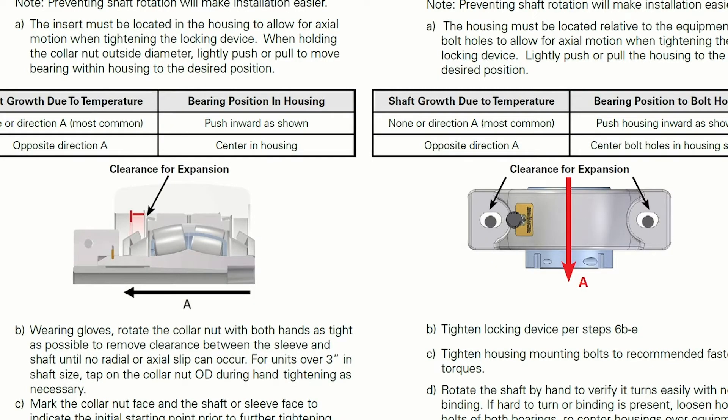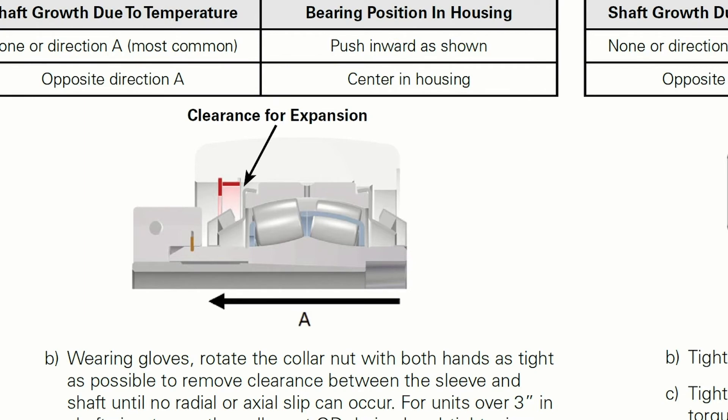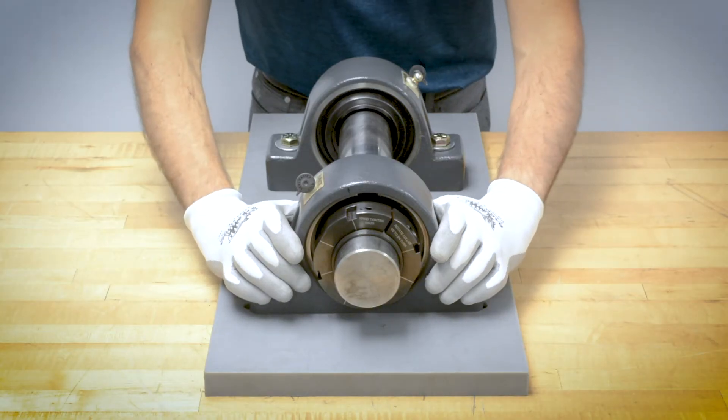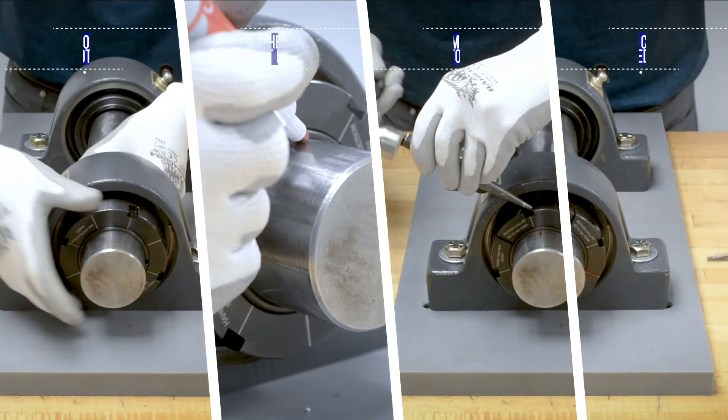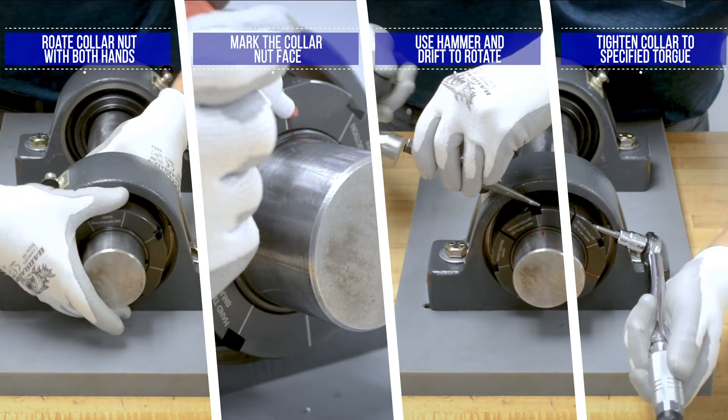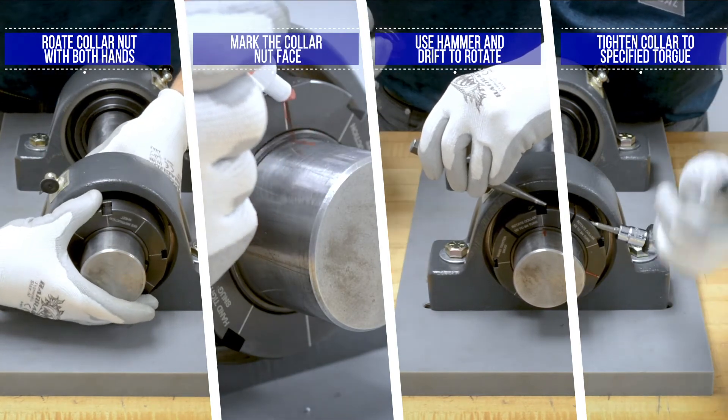When mounting the expansion unit, position the bearing within the housing, opposite the direction of expansion. For most applications, this means pushing the insert into the housing. After the expansion bearing is adjusted, install the bearing following the previous steps.